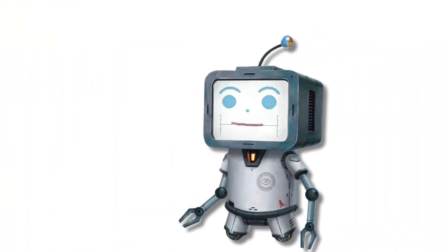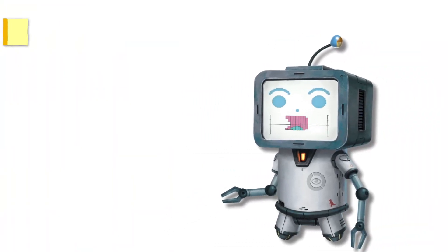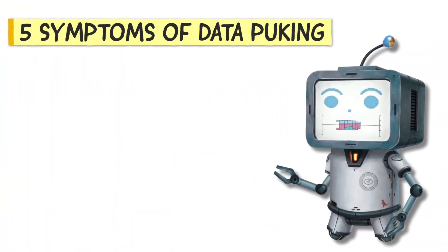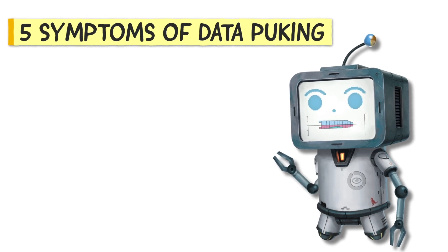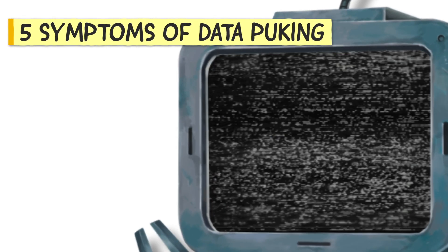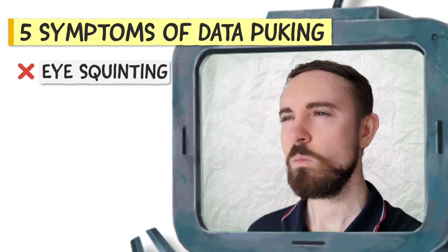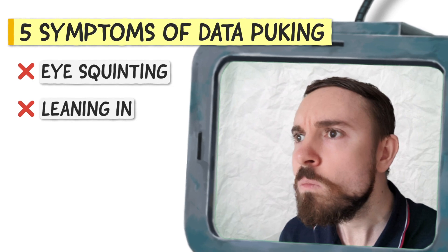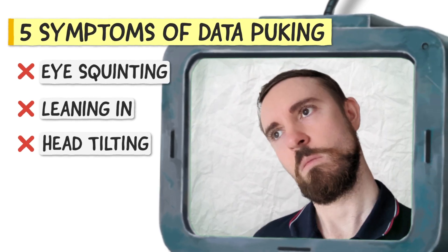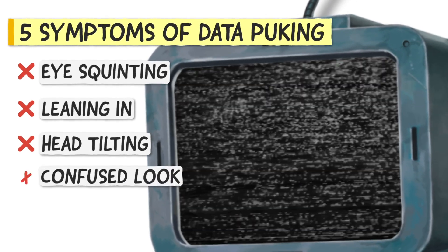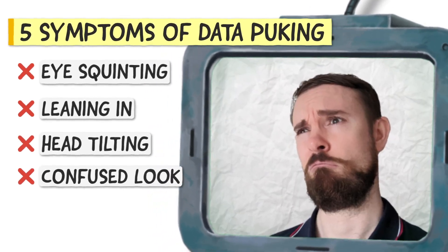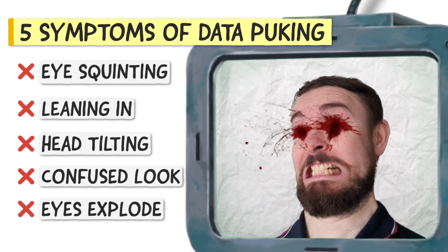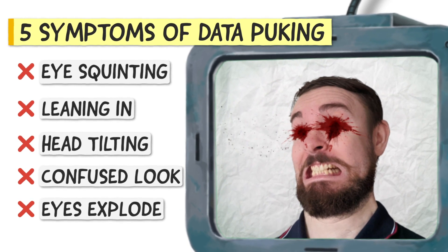It's easy to spot if your audience is looking at a data puke slide, as one of the following five things will happen: eye squinting, leaning in, head tilting, a confused look, or in the worst case, exploding eyeballs.